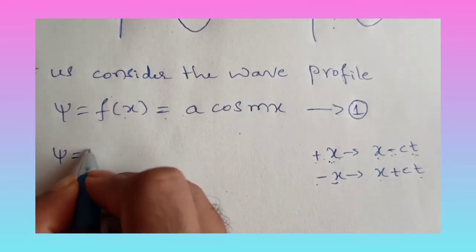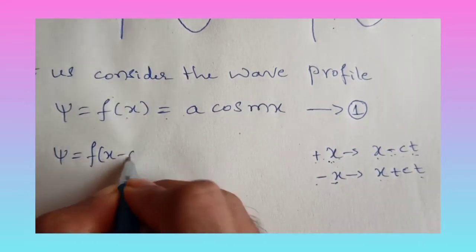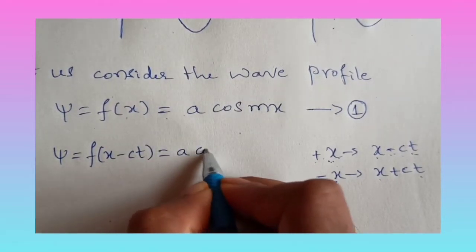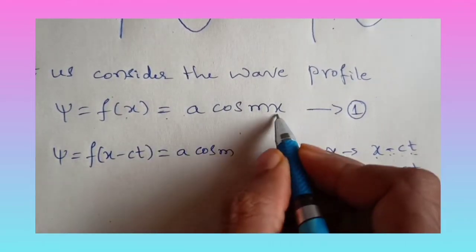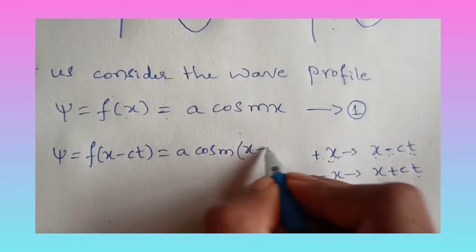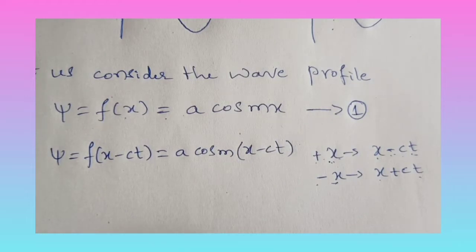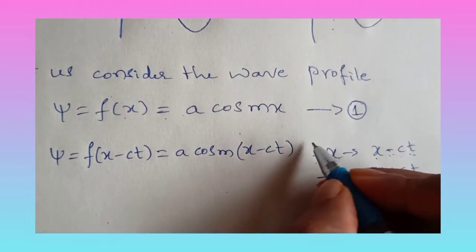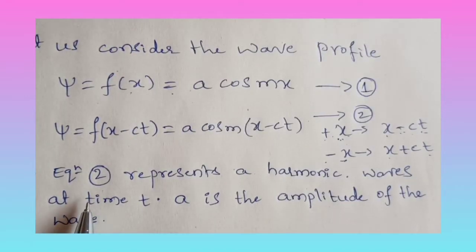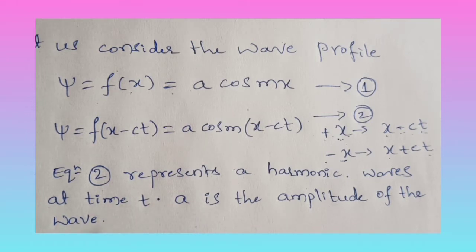So that gives us psi equals f of (x minus ct), which equals A cos m(x minus ct). We can call this equation number two. Equation two represents a harmonic wave at time t, and A is the amplitude of the wave.